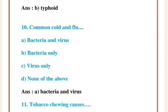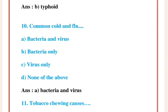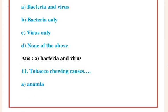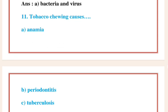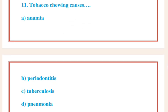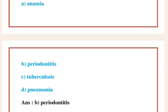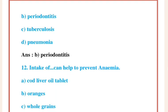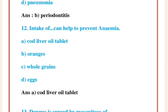Typhoid. Question 10: Common cold and flu Answer A: Bacteria and virus. Question 11: Tobacco chewing causes Answer: Periodontitis. Question 12: Intake of what can help to prevent anemia?